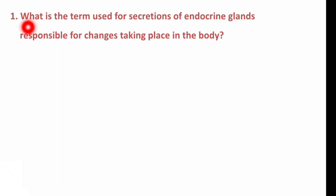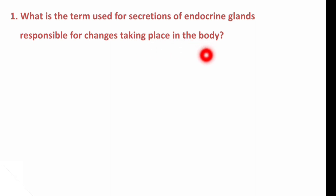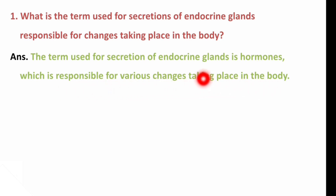Question number 1 is: What is the term used for secretion of endocrine glands responsible for changes taking place in the body? The term used for secretion of endocrine glands is hormones, which are responsible for various changes taking place in the body.